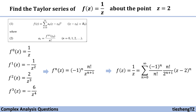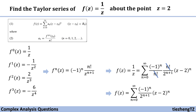Let's do some simple simplification: n factorial can be canceled. Therefore, our final answer — the Taylor series of f(z) = 1/z about the point z = 2 — is the sum from n=0 to infinity of (-1)^n over 2^(n+1) times (z minus 2)^n.